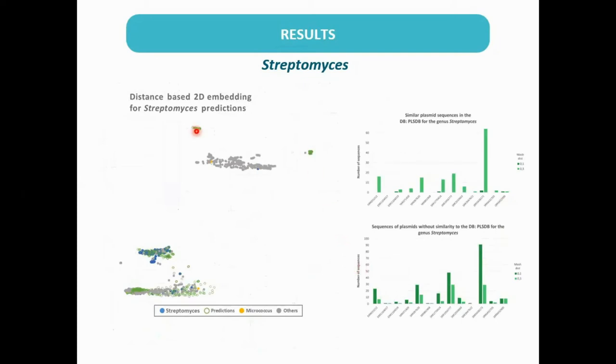Actinobacteria plasmids are divided into two large groups. Of the 162 complete Streptomyces plasmids, most are grouped into the large group of Actinobacteria, and all predictions for the same genomes are closely associated with this group. We can also see a small group of predictions that are grouped separately.